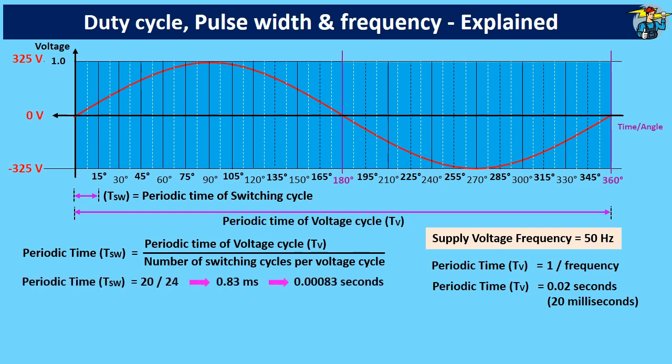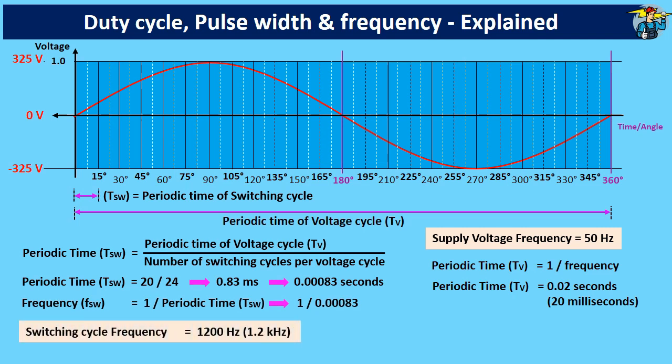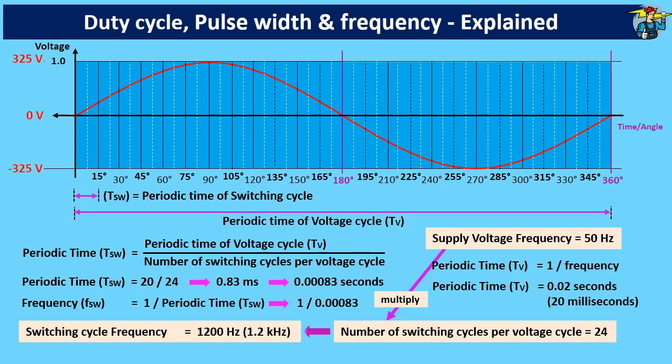It is 0.83 milliseconds, and the frequency of the switching cycle is 1200 hertz. Also, by multiplying supply voltage frequency and number of switching cycles together, you get the switching cycle frequency.